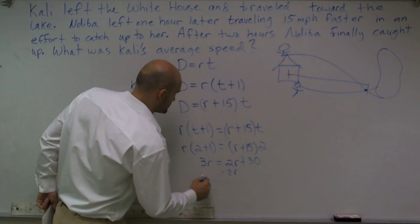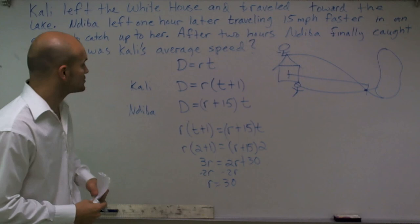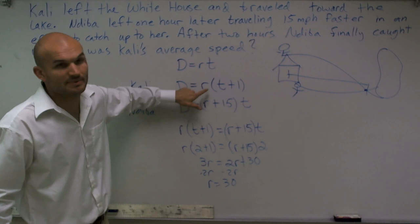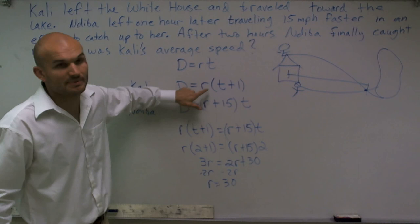Now solving for my variable, I subtract 2R and I get R equals 30 miles per hour. So therefore what I'm asking is what is Callie's average speed? That's going to be her rate, R. Her R is equal to 30. So her average speed is 30 miles per hour. And that's how you solve the distance rate problem.